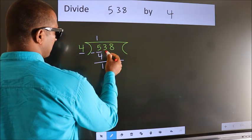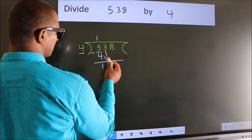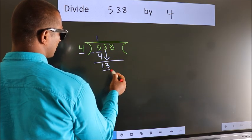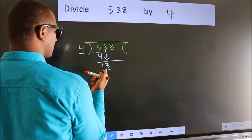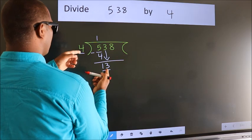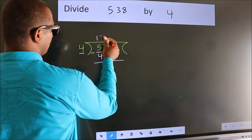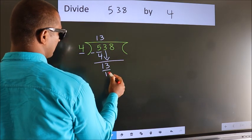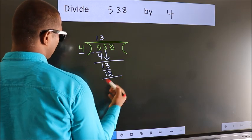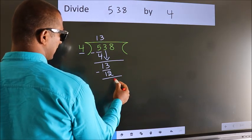After this, bring down the beside number. So 3 down, so 13. A number close to 13 in 4 table is 4 threes, 12. Now we subtract. We get 1.